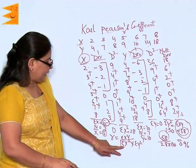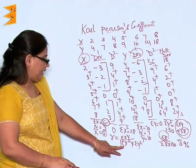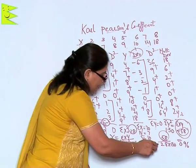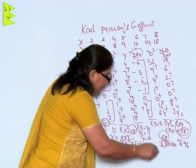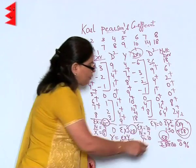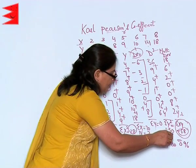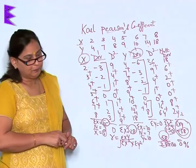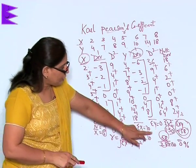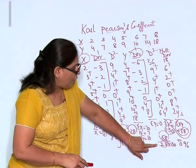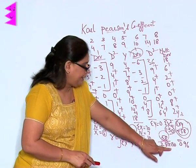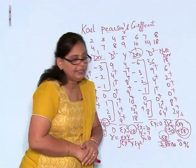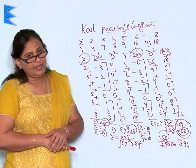Now I have everything in hand. Sigma X squared is 28 and sigma Y squared is 130. Applying the formula: correlation equals 58 upon the square root of 28 into 130, giving me 0.96 as the answer.